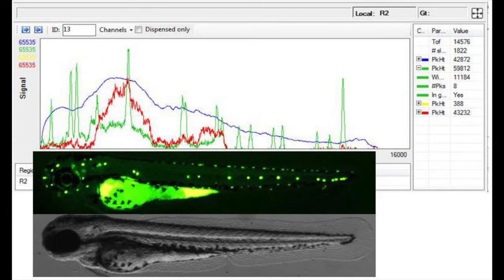Sorting with profiler can be based on up to 21 parameters including peak height, width, number and location.